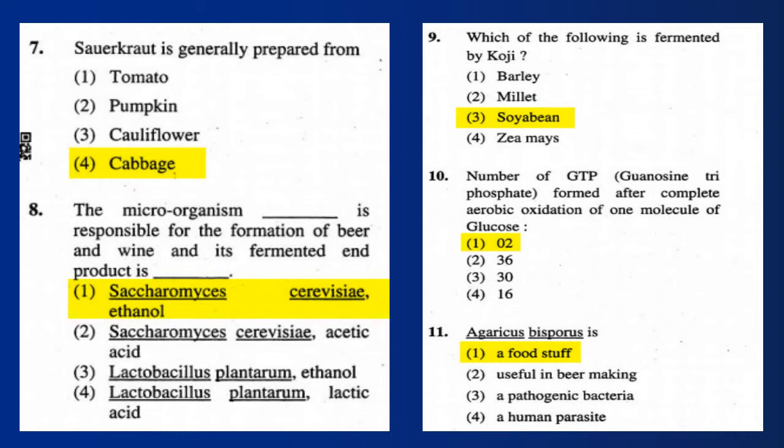Question 9: Which of the following is fermented by Koji? Question 10: The number of GTP formed after complete aerobic oxidation of one molecule of glucose is 2. Question 11: Agaricus bisporus is a foodstuff.